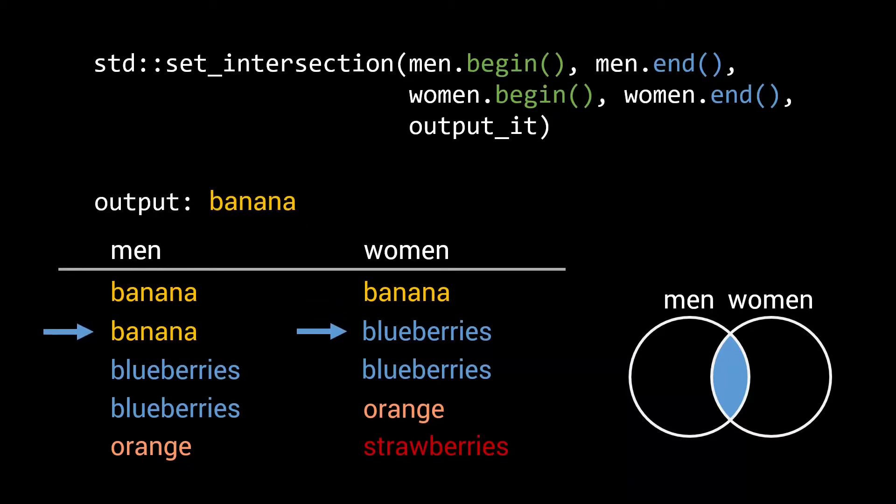Even though there is another banana in the men set, there is no other banana in the other set, and hence it will not be added to the intersection. For the blueberries we do have two elements in both sets. Hence the intersection will contain two blueberry elements.